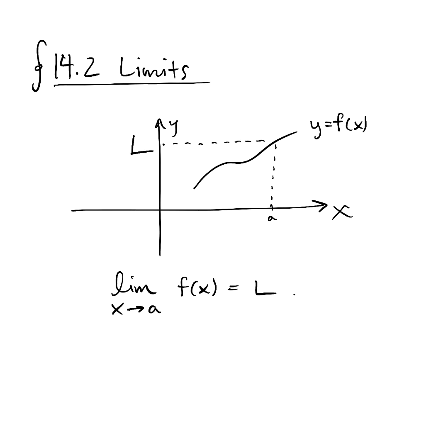Now, this picture is the simplest possible case. This is where the function f is actually continuous at the point a, meaning the value right at a agrees with the limit as you approach a. So in that drawing, L is equal to f of a.